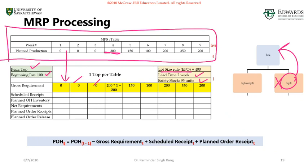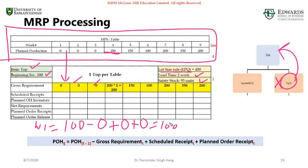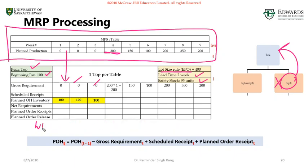Let's start by calculating the planned on-hand for week one. The planned on-hand is beginning inventory — the planned on-hand from the previous week — which is 100. Gross requirement is zero, no scheduled receipt, no planned receipt, so planned on-hand is 100. The same applies for weeks two and three, since gross requirements are also zero for those weeks.